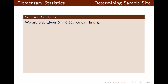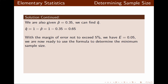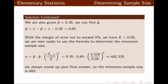We were given P-hat to be 0.35, so Q-hat is 0.65. With the margin of error not to exceed 5%, e is 0.05. Applying these values into the formula, n is approximately 492.335. We always round up the final answer, so the minimum sample size is 493.